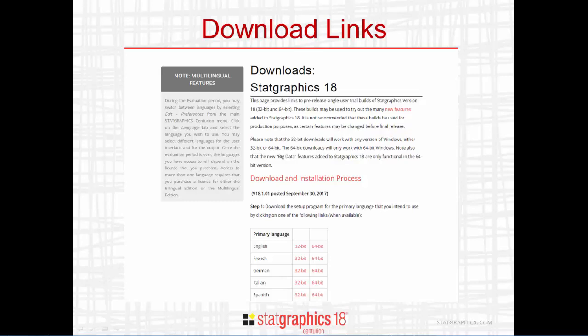You'll also need to decide whether to install the 32-bit version or the 64-bit version. If you have a 32-bit version of Windows on your computer, then you must download and install the 32-bit version of StatGraphics. However, if you're running 64-bit Windows, you can install either the 32-bit or the 64-bit build of StatGraphics 18. The advantage of the 32-bit build is that it's less expensive than the 64-bit build. It has all the same procedures and facilities, but it's limited in the amount of data it can analyze. If you expect to be analyzing more than about 20,000 to 30,000 rows, then you'll need to download and install the 64-bit build of StatGraphics 18.